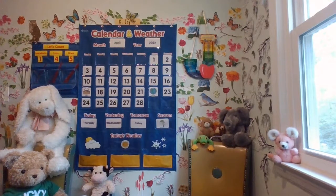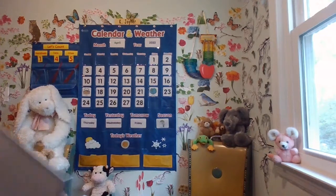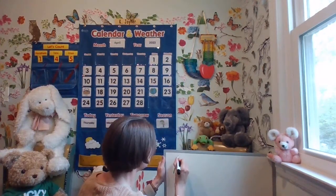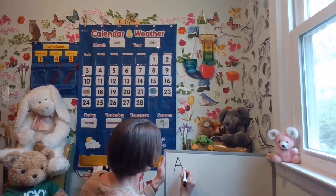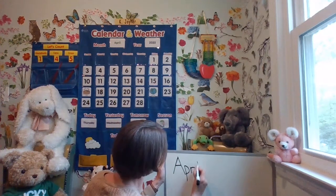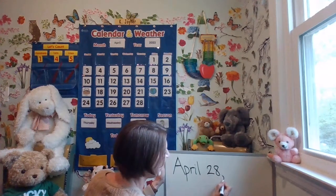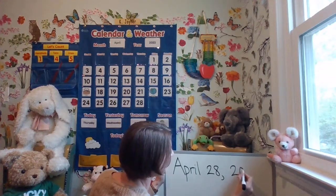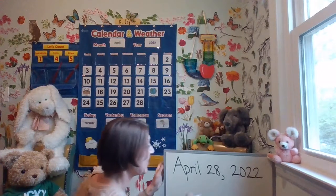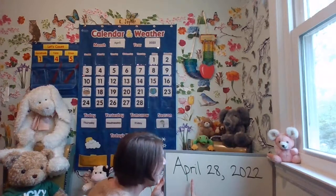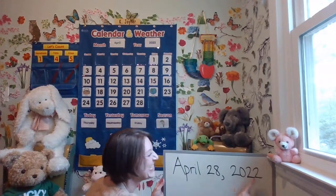Let's write the date. We're going to write April 28th, 2022. You need something to write on and something to write with. Start with your uppercase letter A — slant down, slant down, pull across. P-R-I-L spells April, finger space. Write the number 28 with a two and a comma, finger space, 2022. Hit the subscribe button, thumbs up if you like this video, and practice reading April 28th, 2022.